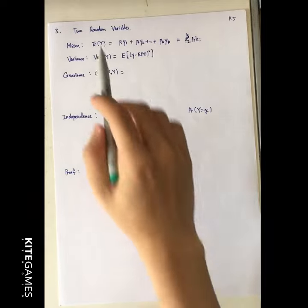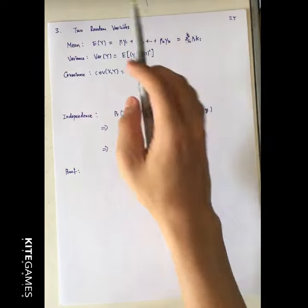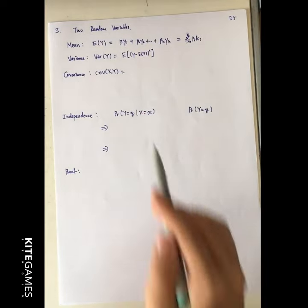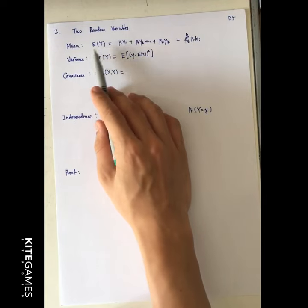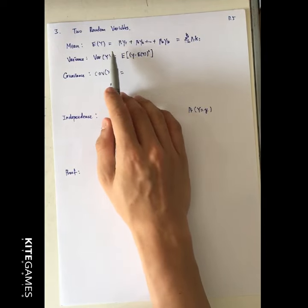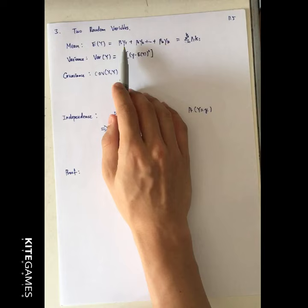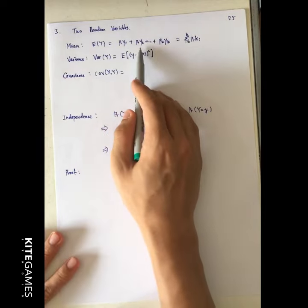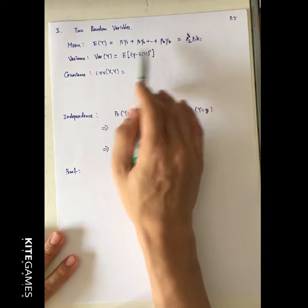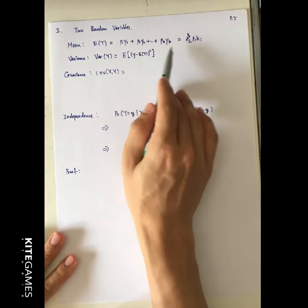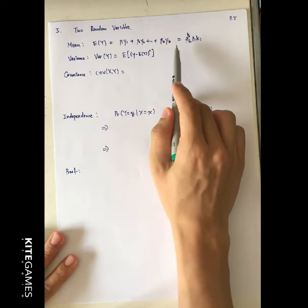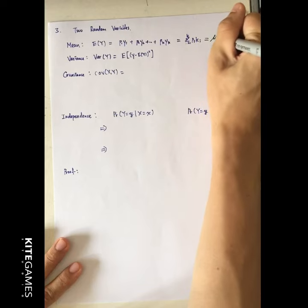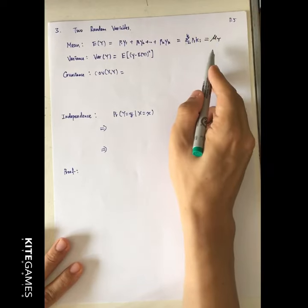Next we're going to talk about the two random variable cases. Let's recap what we have learned. We have covered the expected value, or we call it the mean. The expected value is the value of y multiplied by the probability, plus the second value of y times its probability. We add up all those terms to get the expected value. We can also call this mu_y, representing the mean of y.